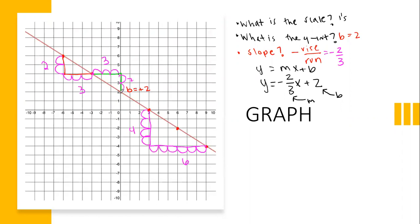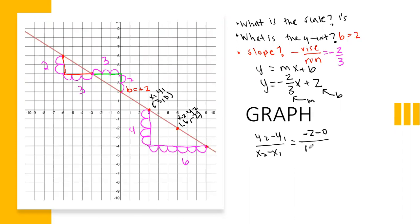If you don't understand the rise over run, you could pick two points on your line — like three, zero and six, negative two — and do y2 minus y1 over x2 minus x1 to solve the slope. So: negative two minus zero over six minus three is negative two over three. There's my slope.